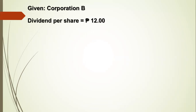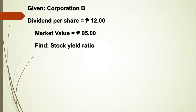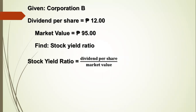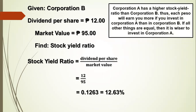For Corporation B: dividend per share is 12 pesos, market value is 95 pesos. Stock yield ratio equals 12 divided by 95, which equals 0.1263 or 12.63%. Corporation A has a higher stock yield ratio than Corporation B. Thus, each peso will earn you more if you invest in Corporation A than in Corporation B. If all other things are equal, then it is wiser to invest in Corporation A.